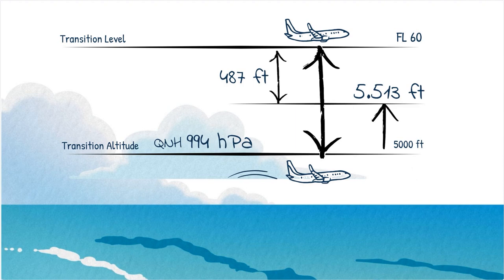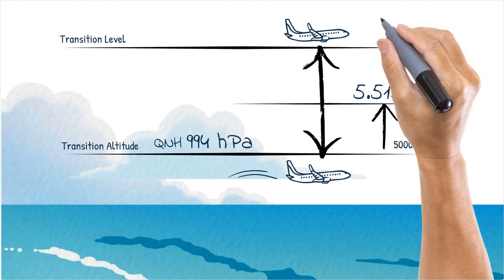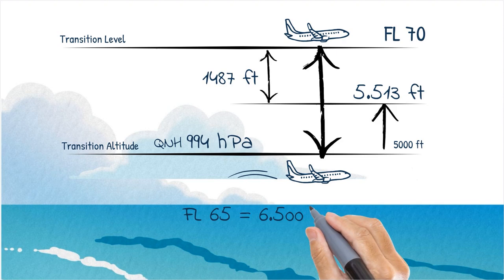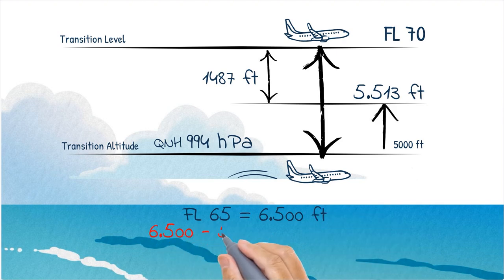If there was an aircraft above at flight level 60, it would only be 487 feet above. In order to get that required 1,000 feet vertical separation in between, we have to raise the transition level to flight level 70. Even flight level 65 wouldn't work since we would still be that 13 feet short of the minimum vertical separation.